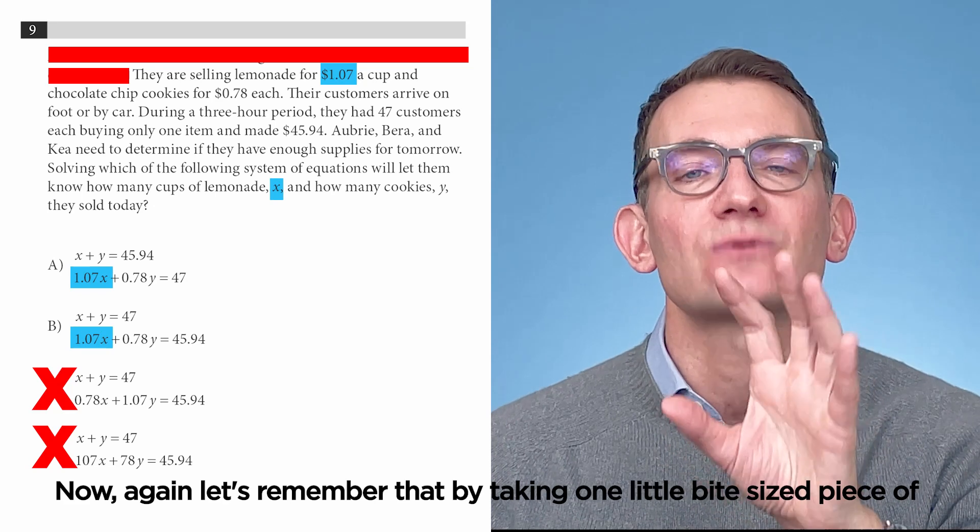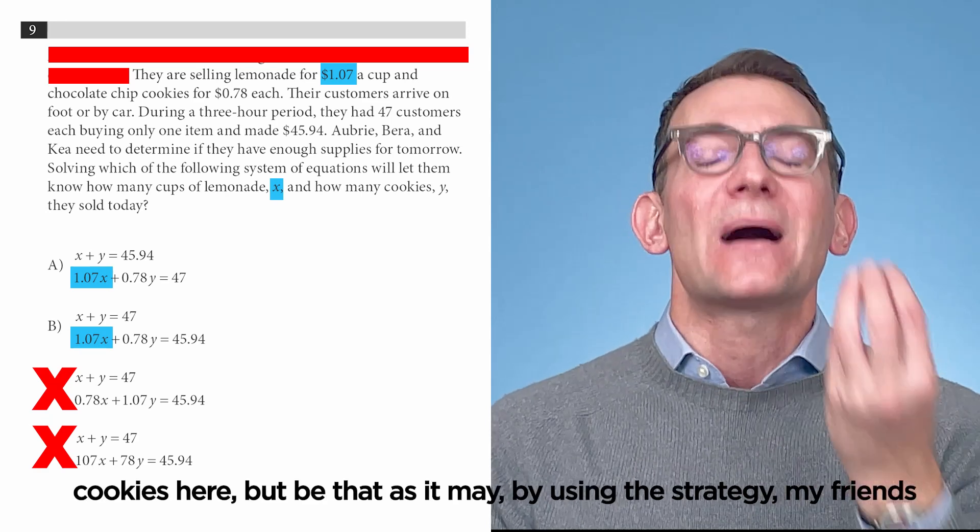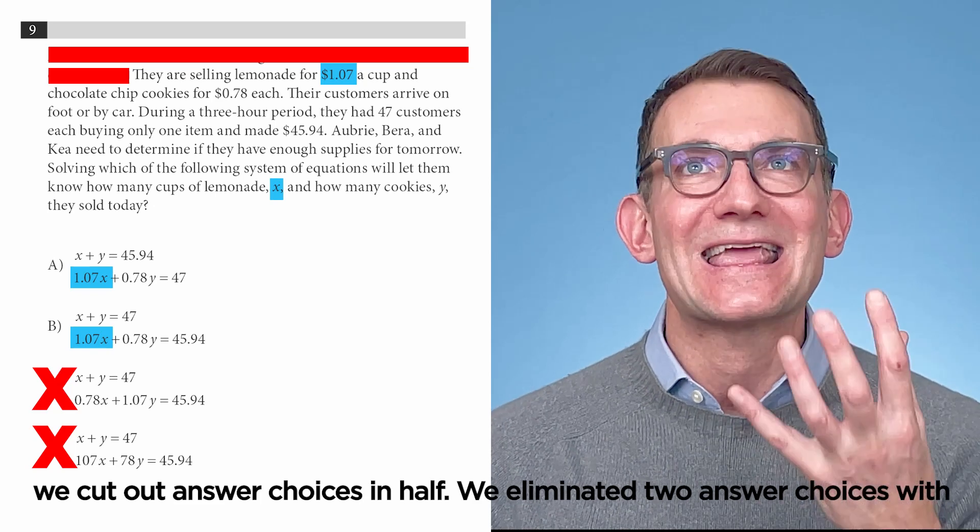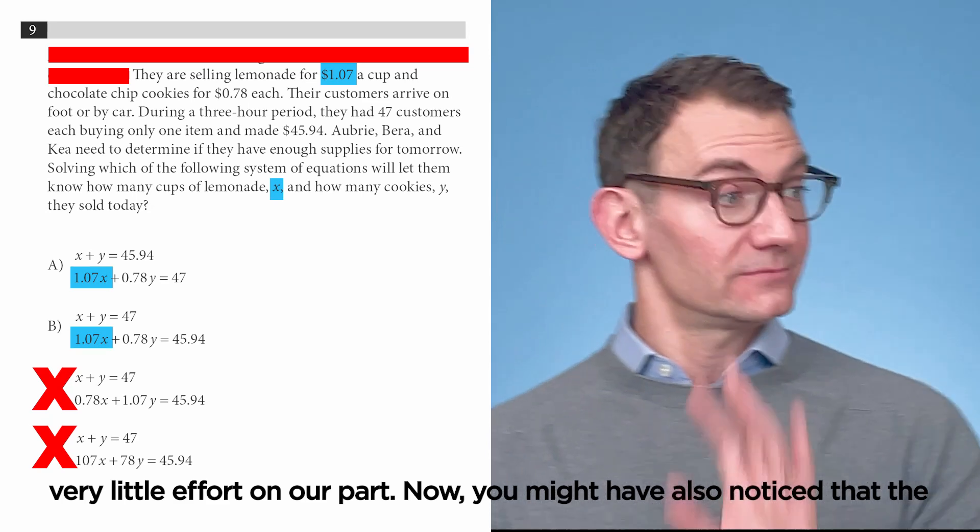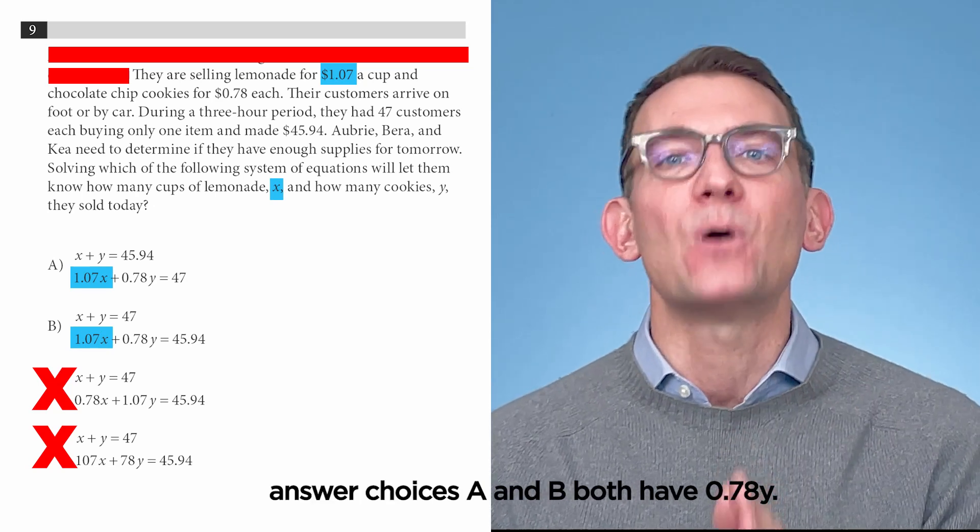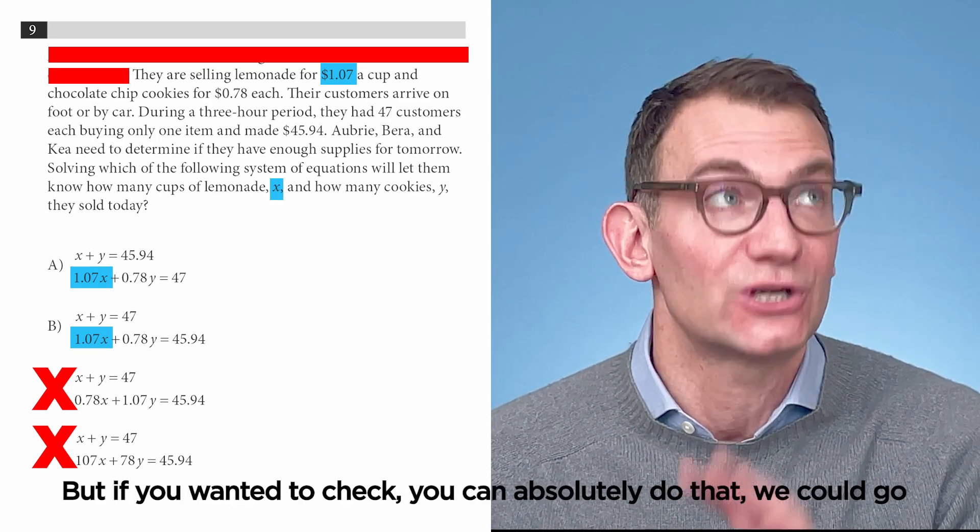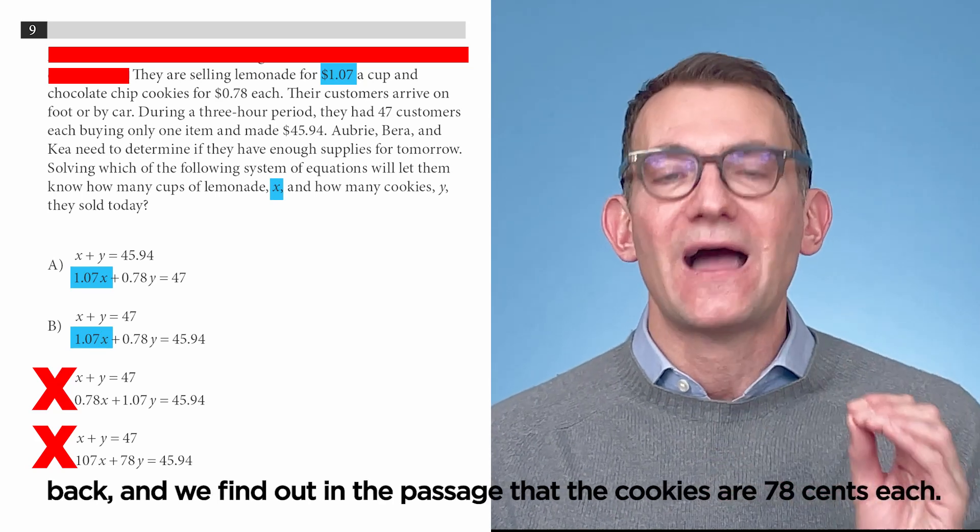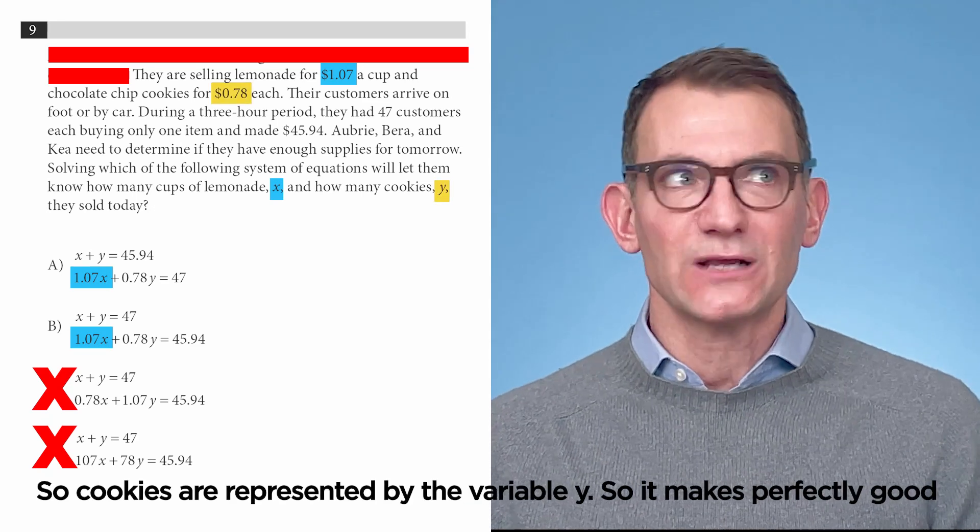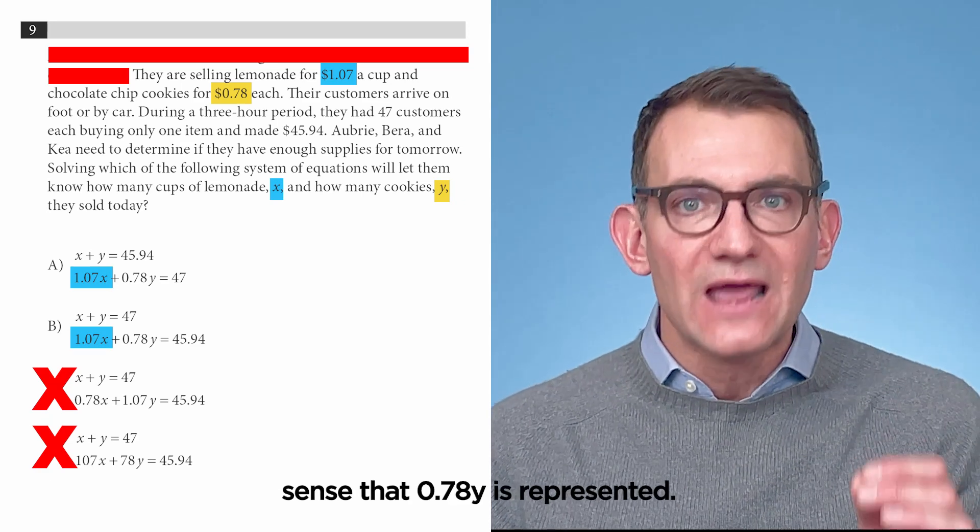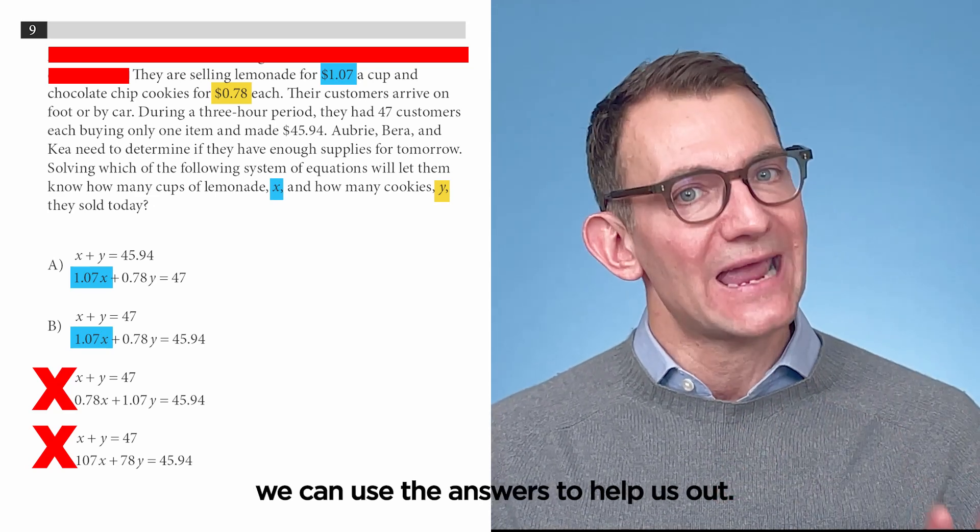Now, again, let's remember that by taking one little bite-sized piece of this—and of course, it's very appropriate that we're talking about cookies here—but be that as it may, by using this strategy, we cut the answer choices in half. We eliminated two answer choices with very little effort on our part. Now, you might have also noticed that the answer choices A and B both have 0.78y. So, we know that that has to be correct, but if you wanted to check, you can absolutely do that. We could go back and we find out in the passage that the cookies are 78 cents each. So, cookies are represented by the variable y. So, it makes perfectly good sense that 0.78y is represented. So, A and B have most of the second equation right.